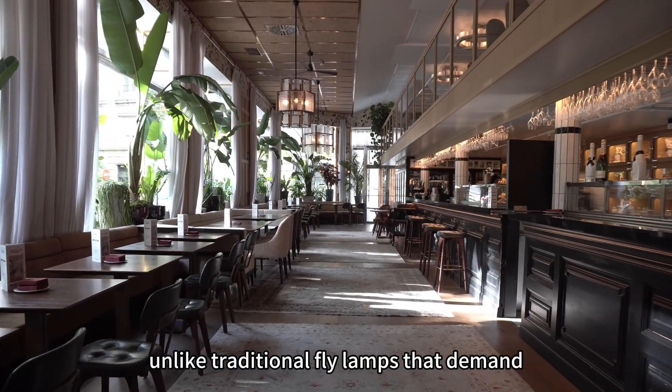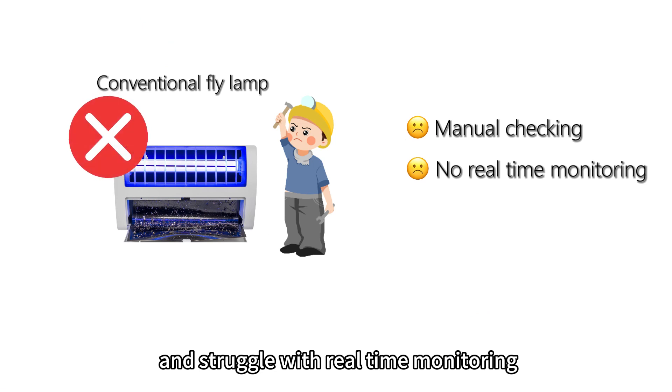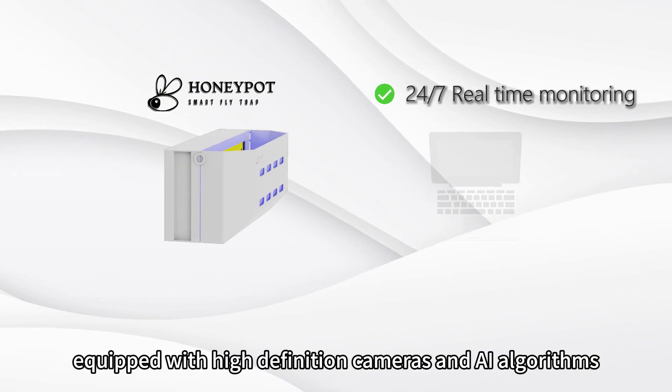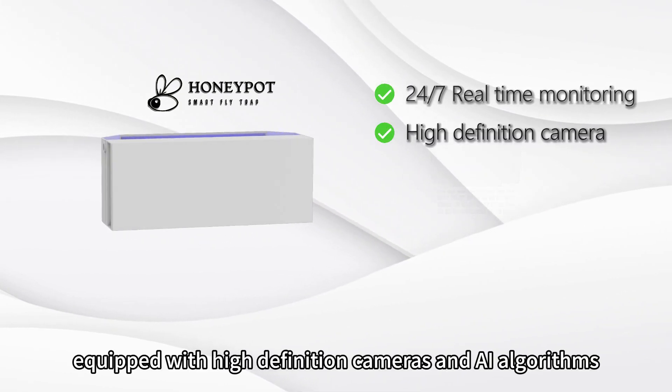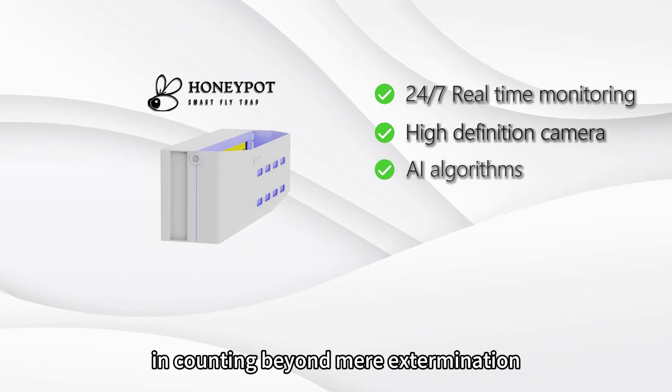Unlike traditional fly lamps that demand constant manual checking and struggle with real-time monitoring, Honeypot Smart Systems provide 24/7 surveillance without the need for supervision. Equipped with high-definition cameras and AI algorithms, they offer unparalleled accuracy in counting.